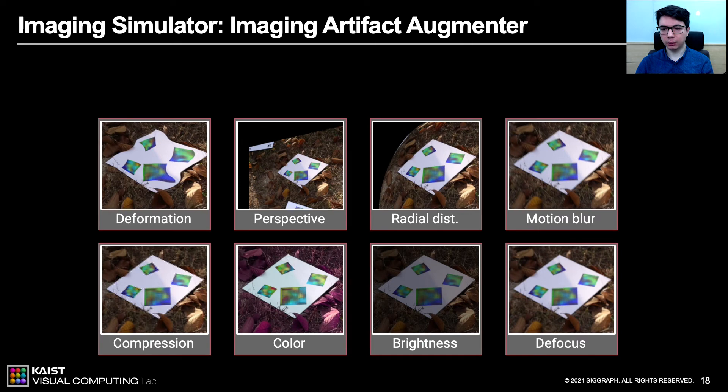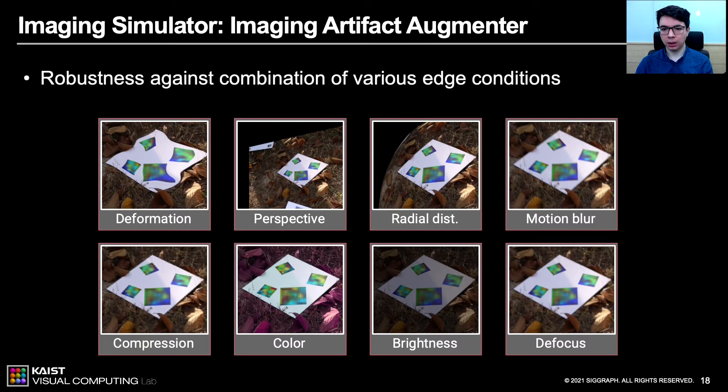After rendering the markers, our imaging artifact augmenter randomly applies a set of differentiable augmentations. These augmentations are randomly combined when applied, and they make our network robust against these cases. Here, we show eight examples of those important augmentations. We group them as color and geometric types. Among the color augmentations, we apply JPEG compression artifacts, hue shift, brightness, defocus, motion blur, sensor noise, and gamma artifacts.